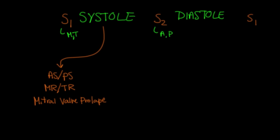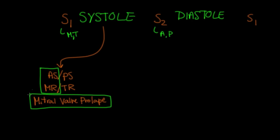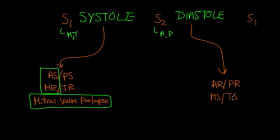The ones that we're going to talk about today are going to be the left-sided valvular conditions — so aortic stenosis and mitral regurgitation, as well as mitral valve prolapse. Now for diastolic murmurs, meaning they occur between S2 and S1, these are going to be aortic regurgitation or pulmonic regurgitation, and mitral stenosis and tricuspid stenosis.